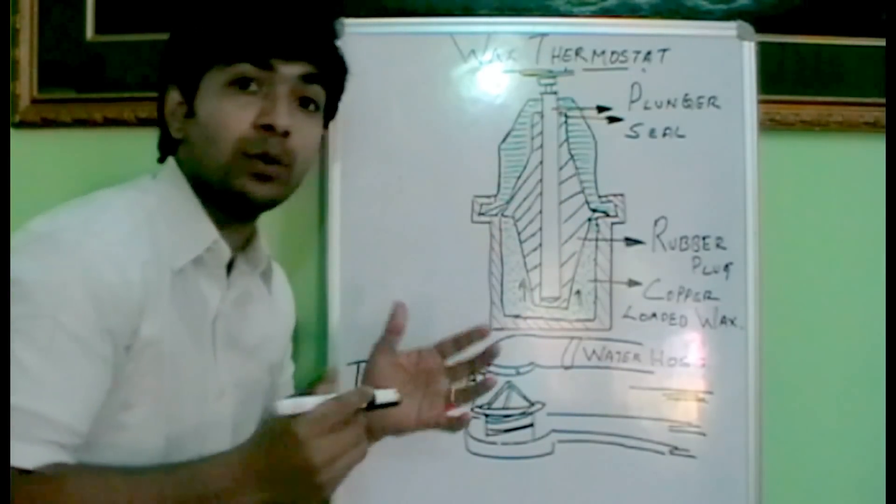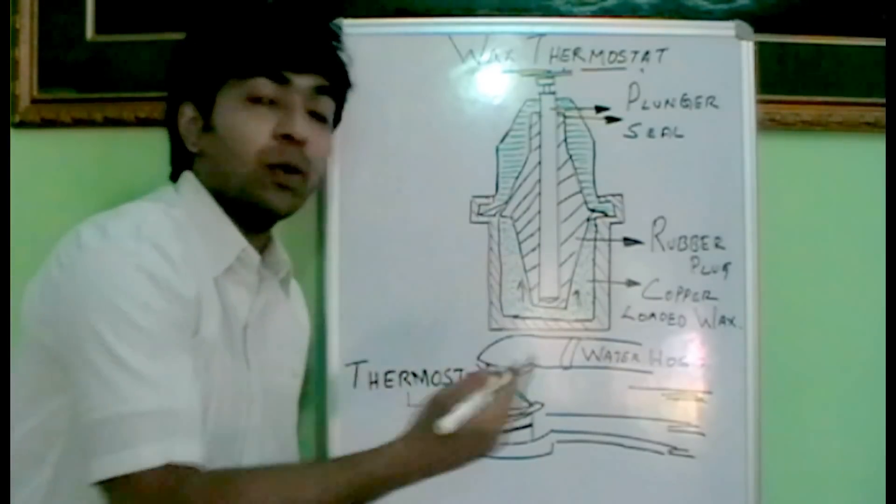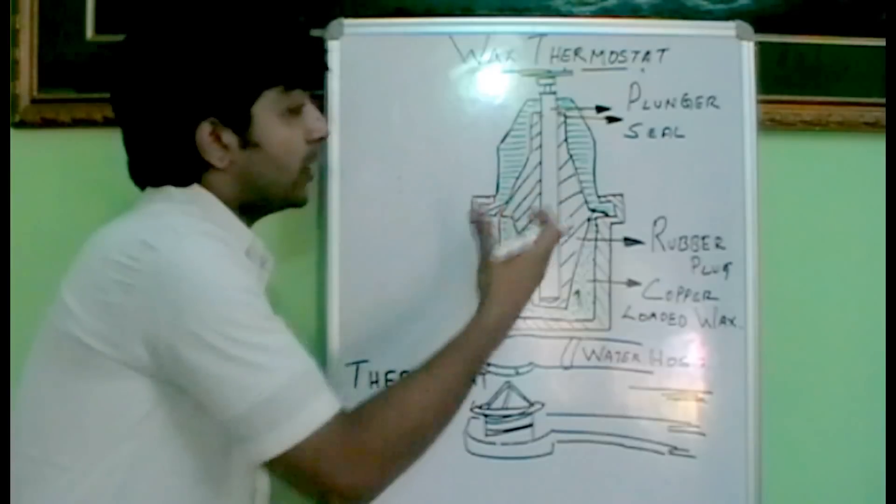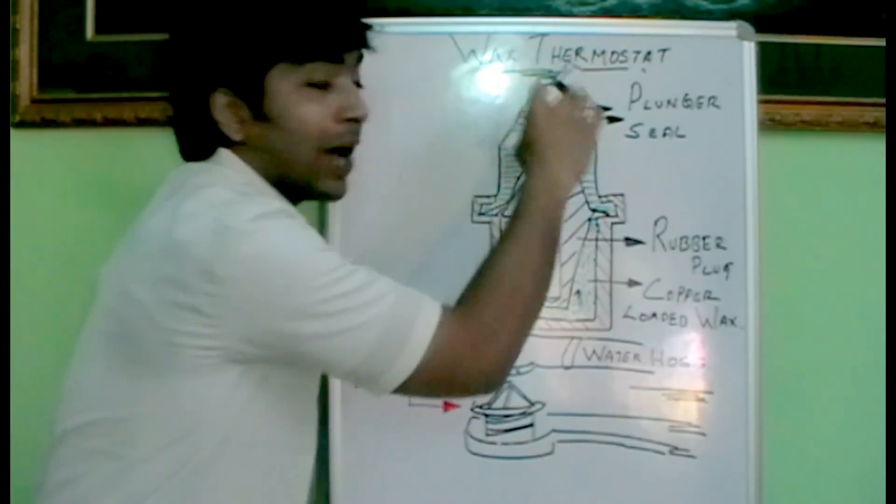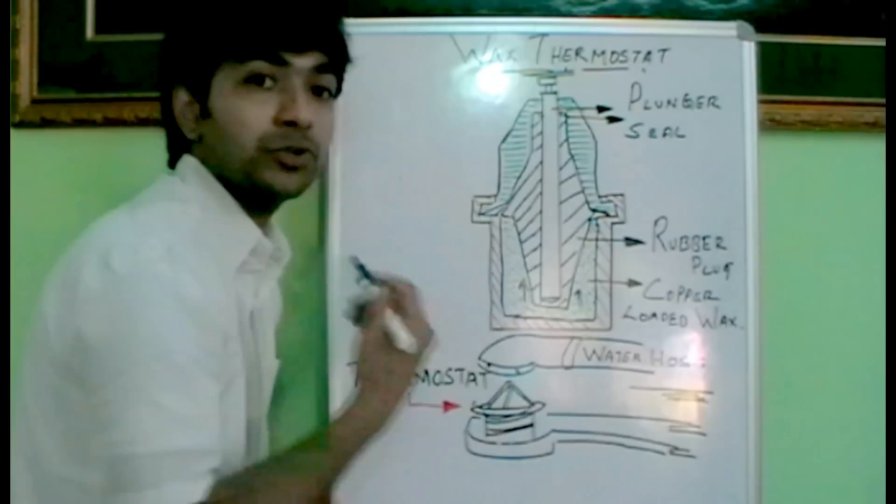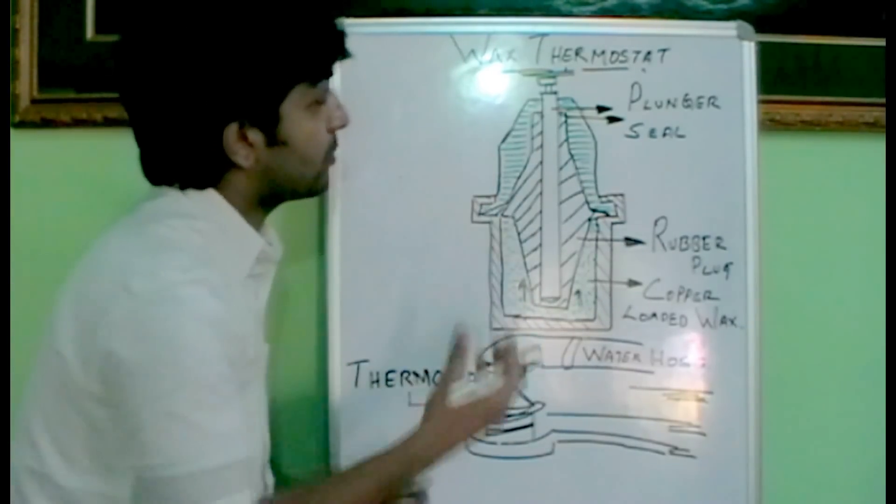So this plunger is connected towards the valve, resulting in the valve opening. So what happens? The water in the galleries of the engine will be directed through this opening of the valve towards the radiator and starts to cool the system. That's how a wax type thermostat opens.